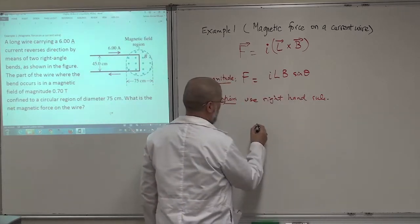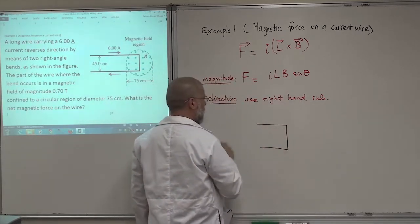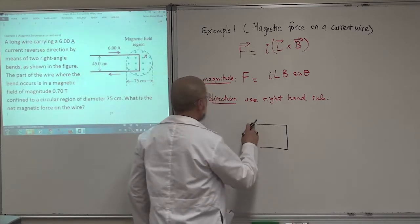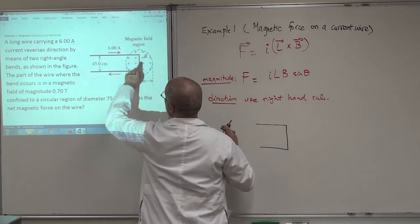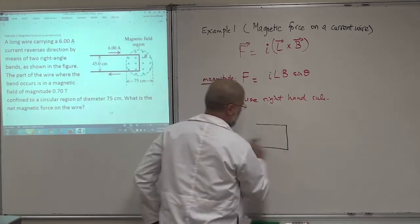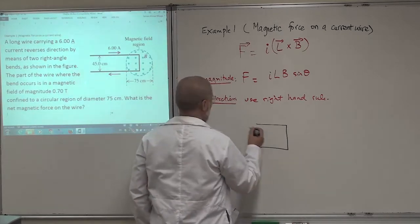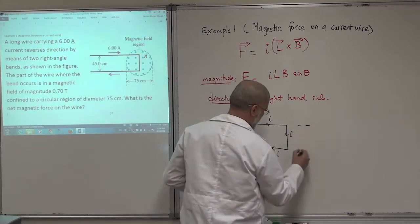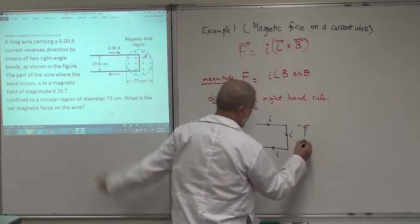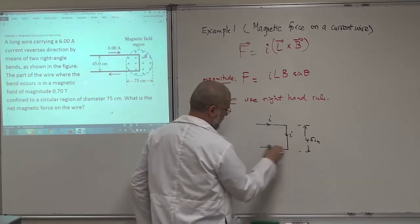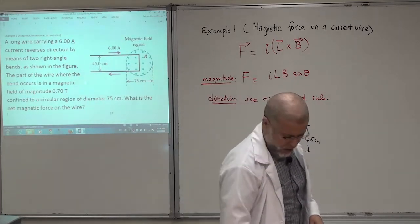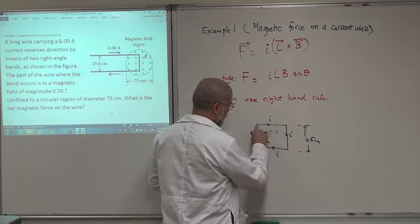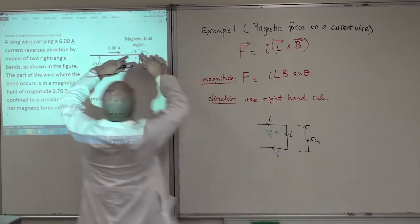Let me draw that figure quickly. The outside portions have no magnetic field. The portion of this wire which is going to be affected by the magnetic field will be this small portion here. The current is in this direction, and this distance — the length of this wire — is 45 centimeters. Now let's look at the directions.